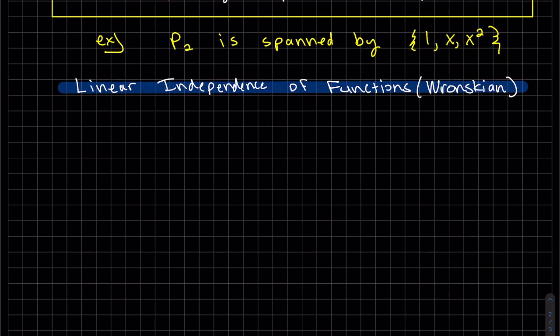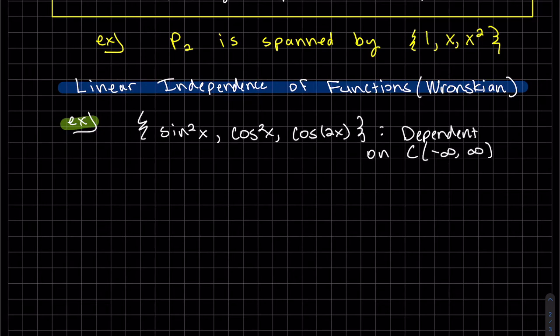Now we're going to talk about the independence of functions, and it's called the Wronskian. But before we start that, let's look at an example. So this set is dependent, and we can see this two ways. The first way is we can see this function. We know cosine of 2x is equal to cosine squared x minus sine squared x. So we can see that cosine of 2x can be written in terms of the other two.